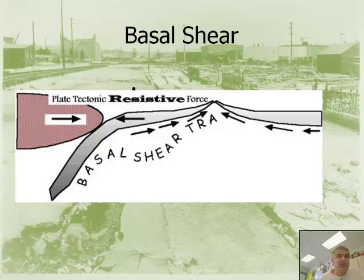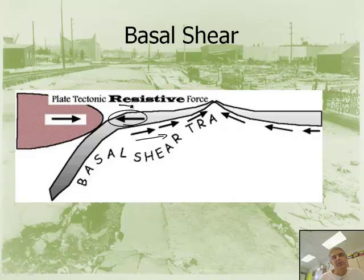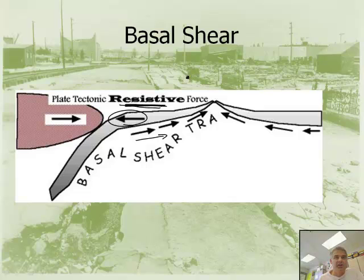Basal shear is where you have forces opposing each other — a shear force in one direction and a force in the opposite direction, which resists motion. This acts as a resistive force that slows plate movement down. Not all forces cause the plates to move; basal shear actually slows them down.